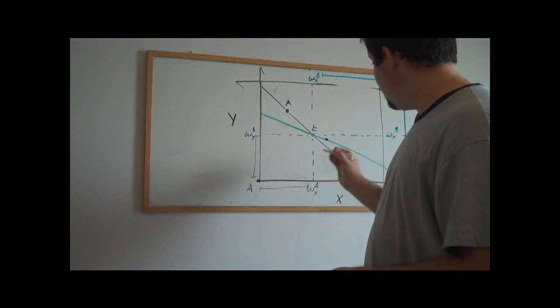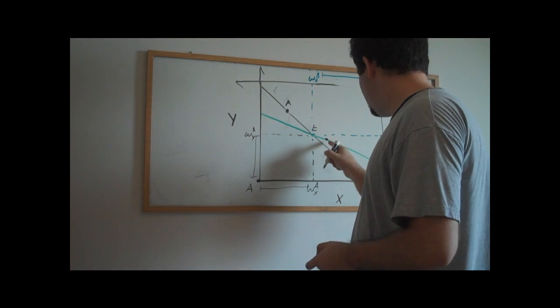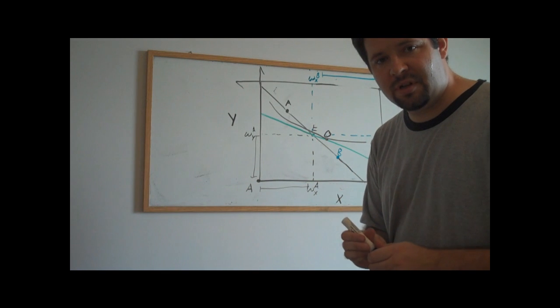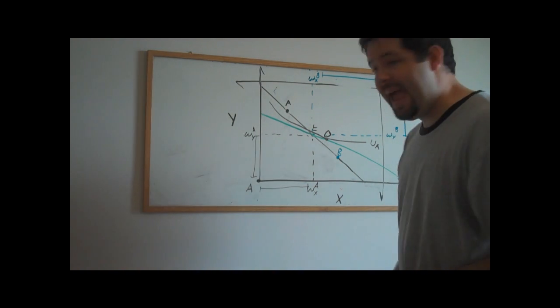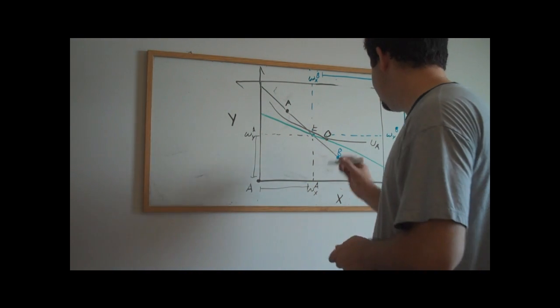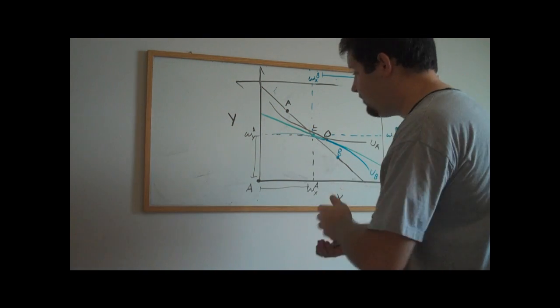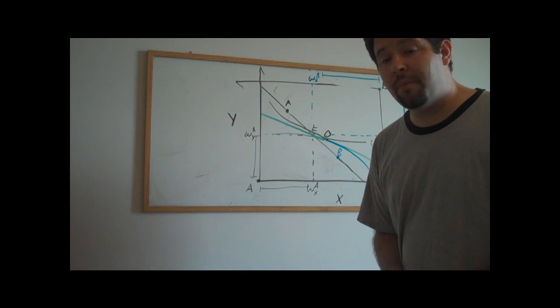Now suppose that that's what happens here at point O. Individual A's indifference curve is tangent and individual B's indifference curve is tangent. And so that's actually what's going to help us define what an equilibrium is in an endowment economy.